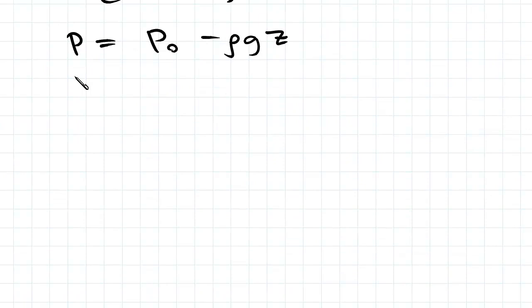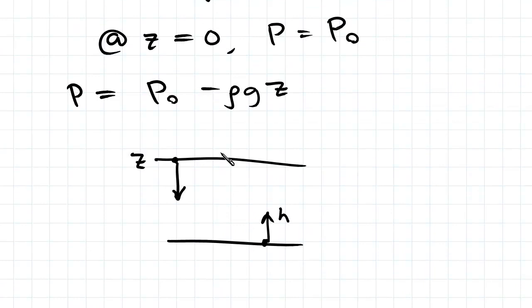Now if we change what points we're considering in the fluid, say z goes from top to bottom, h goes from bottom to top. Z would be negative as we go down the fluid, but h would be positive. So we know that h equals negative z.